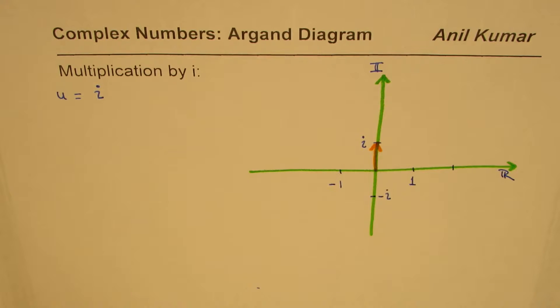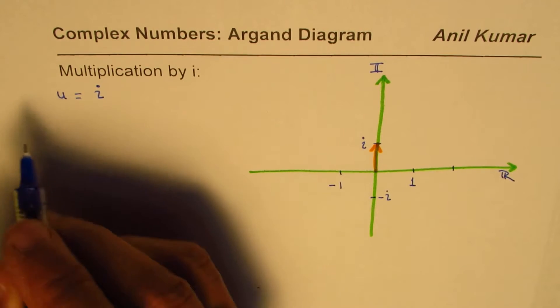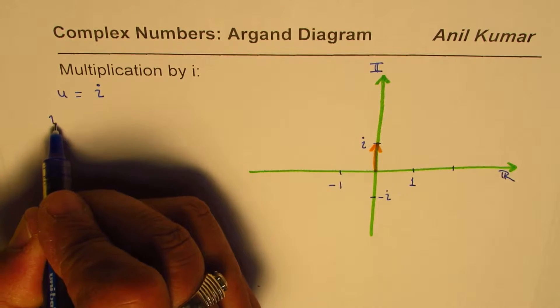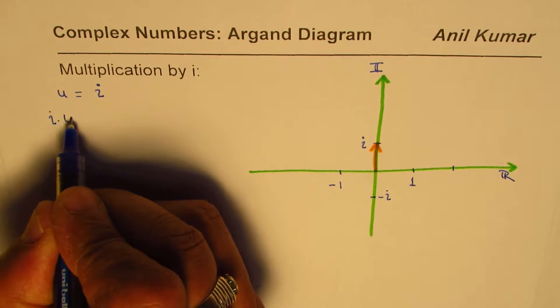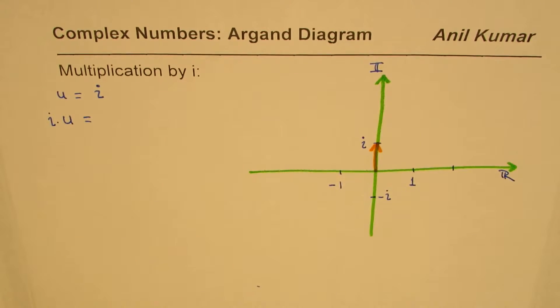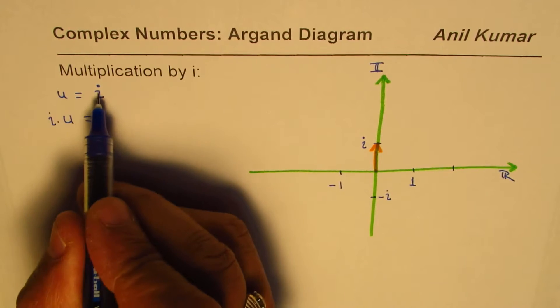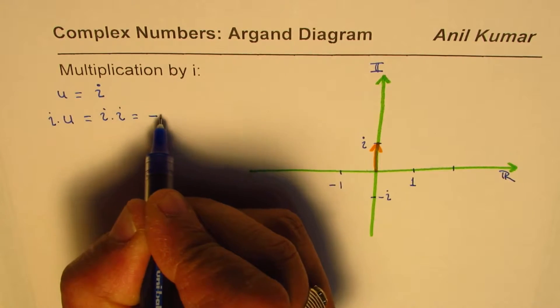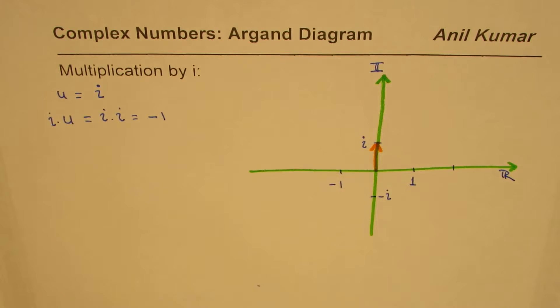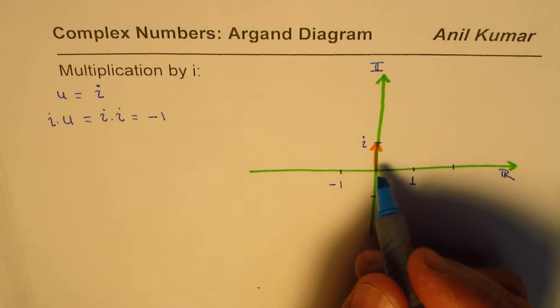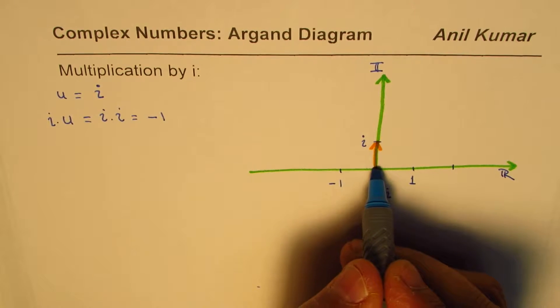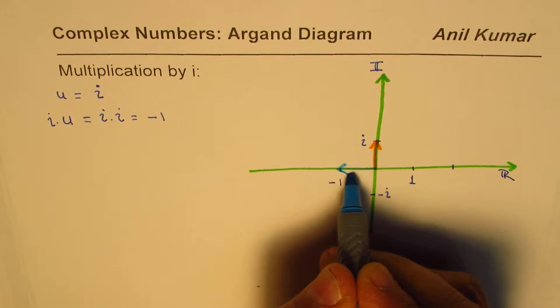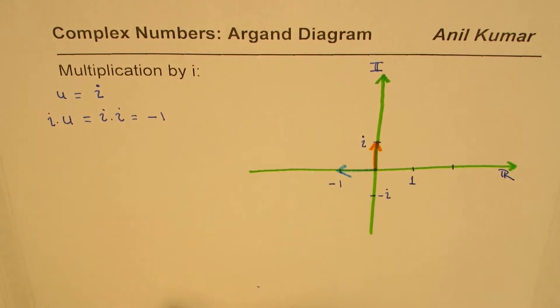Now what happens if I multiply this complex number by i? If I say it is i times u, then what happens? Well, the value of u is i, so it becomes i times i, which is minus 1. So minus 1 will mean that this complex number will be now kind of like this, so that is minus 1.